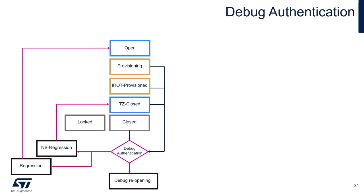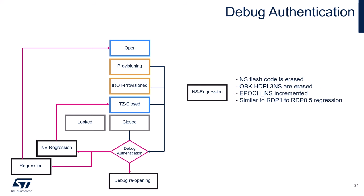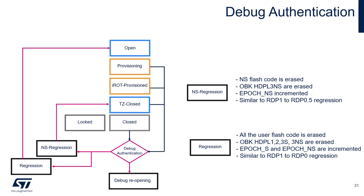Associated to the new device lifecycle, we have the new debug authentication features, which allow a trusted debugger to temporarily reopen access without compromising sensitive information, and/or to manage a partial or full regression. Partial regression corresponds to releasing non-secure code and assets: the non-secure flash code is erased and the epoch non-secure monotonic counter is incremented. Full regression corresponds to releasing all code and assets: all user flash code is erased, OB keys for HDP levels 1, 2, 3 secure and 3 non-secure are erased, and the epoch secure and epoch non-secure monotonic counters are incremented. We'll present later in more detail how to configure and use the debug authentication feature.